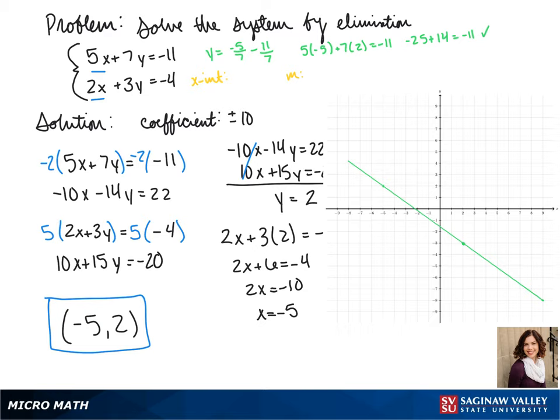For our second line, we can find our x-intercept which is negative 2 and our slope, and graph from there. We plot negative 2, then go down 2 and over 3, down 2 and over 3. There's our second line.